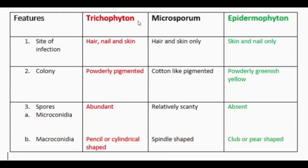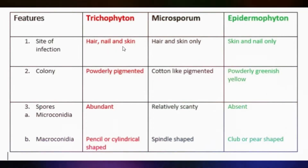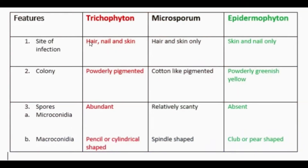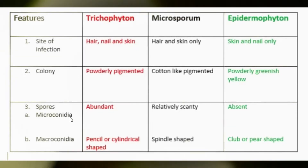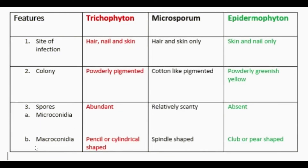Let's start from Trichophyton. It affects hair, nail, and skin — 'tricho' meaning three, so it affects these three sites. The colony is powdery pigmented. Microconidia are abundant, whereas macroconidia are pencil or cylindrical shaped.